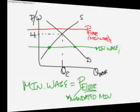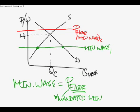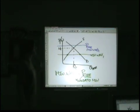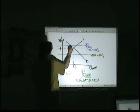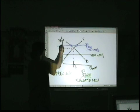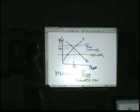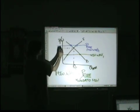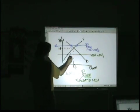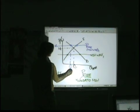If that is the mandated wage, what's going to happen is that the demand is lower than supply, because it is closer to this axis. How much labor is actually going to be bought and sold in this market with this minimum wage? Less.